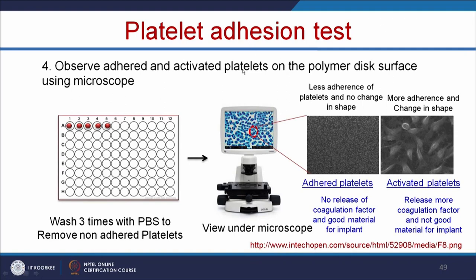Observe the adhered and activated platelets on the polymer disc surface under the microscope, washing 3 times with PBS to remove non-adhered platelets. Under the microscope, if you see less adherence of platelets with no change in shape, it means there is no release of coagulation factors and the material is good for implant use. If you see more adherence and change in platelet shape, it indicates activated platelets releasing more coagulation factors, meaning the material is not suitable for implant.